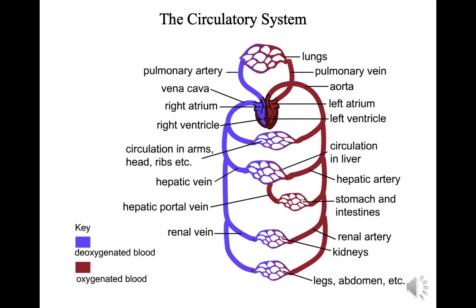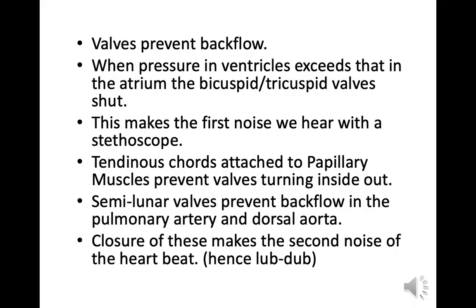This diagram shows the circular artery system. The key shows deoxygenated blood and oxygenated blood. These slides go more in depth about the heart.